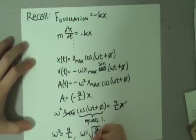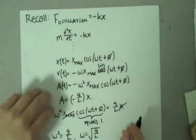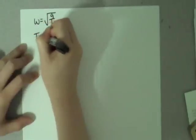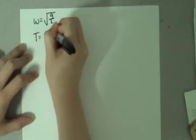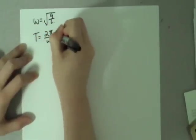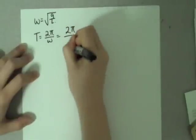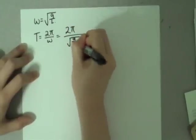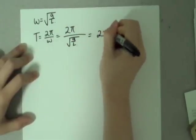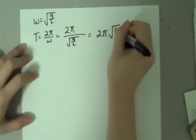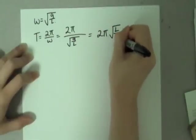Solving for omega, we get that omega equals the square root of g over L. We also know that the period T equals 2 pi over omega. So plugging in our found value for omega, we derive that the period of an ideal pendulum is equal to 2 pi times the square root of L over g.